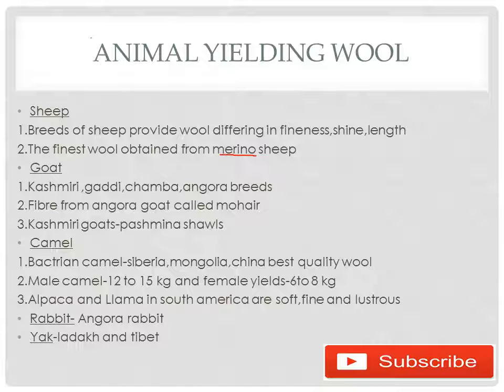A female camel yields 6 to 8 kg of wool. Alpaca and llama in South America produce soft, fine, and lustrous fiber. The finest quality rabbit wool is obtained from the Angora rabbit. The yak from Tibet and Ladakh also gives finest quality wool.